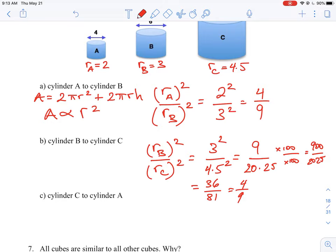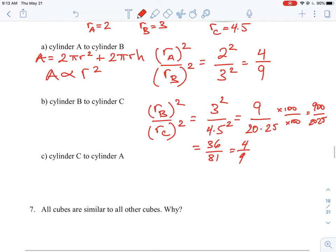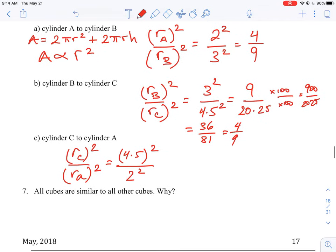And then the last question is the ratio of cylinder C to cylinder A. So we have to square those. C is going to be 4.5, and we'll square that. And A is going to be 2 squared. So we square that. And in this case, we get 20.25 again, over 4.